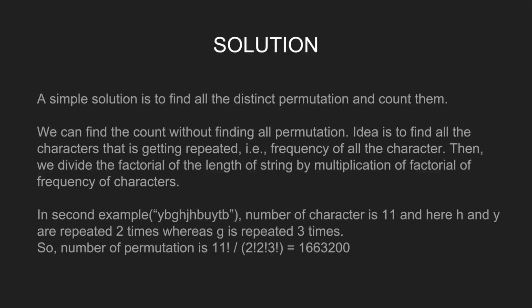In the second example, the number of characters is 11. Here 'h' and 'y' are each repeated 2 times, whereas 'g' is repeated 3 times. So the number of permutations is 11! divided by 2! × 2! × 3!, which is equal to 1663200.